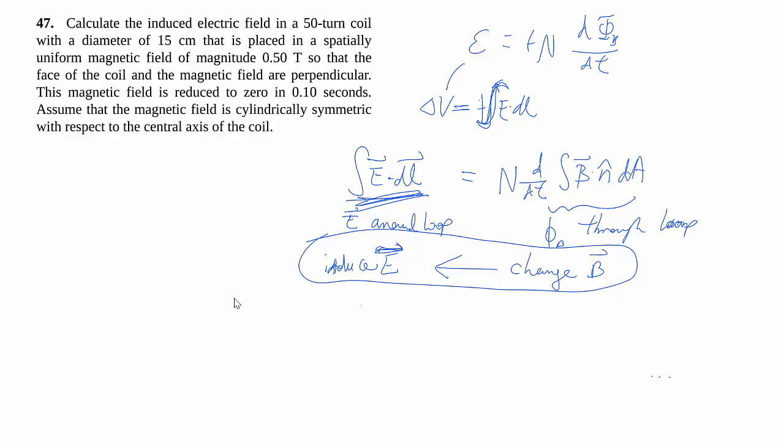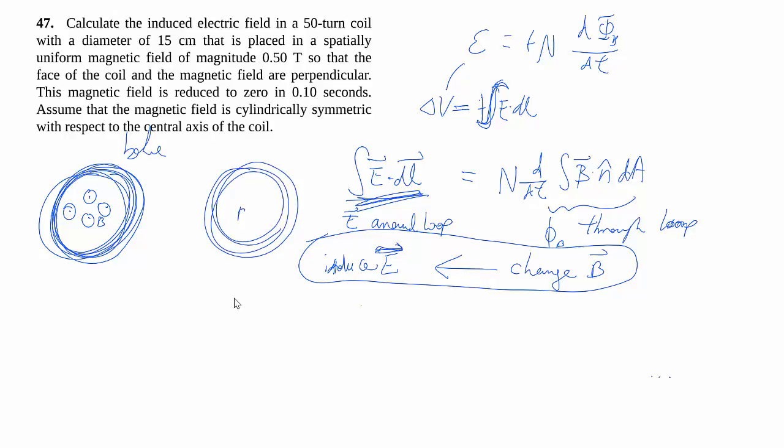So to do that, we can look at this situation here. We want to find the induced electric field in a 50-turn coil. Let's say that's 50 times. It has a certain diameter, so you can figure out the area. So it's in a spatially uniform field. Let's just say the field comes out of the page, that's your B, that's your before picture. And then that's your after picture. So after picture goes to less B. In fact, it goes all the way to zero.